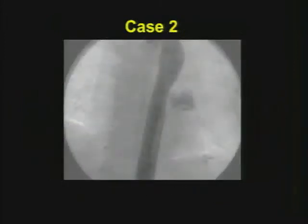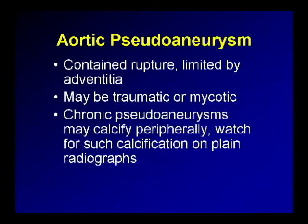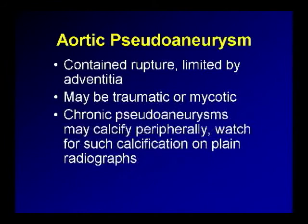Case number two: one of those gut-check moments for the interventionalist. This person presented because blood was pouring out around a chest tube. This was an aortic pseudoaneurysm. Pseudoaneurysms are essentially contained ruptures — limited by the adventitia. They may be traumatic or mycotic. In this case, we had a little bit of both because of a chest tube rubbing against the pulsatile aorta in the setting of an adjacent pneumonia. Chronic pseudoaneurysms in patients who survive may calcify peripherally — a classic finding to look for on chest radiographs or CT scans.